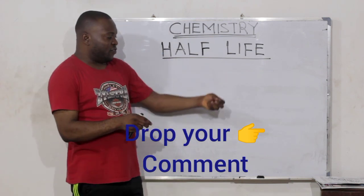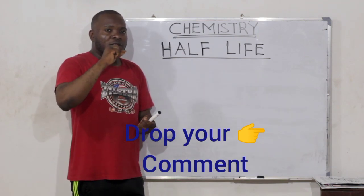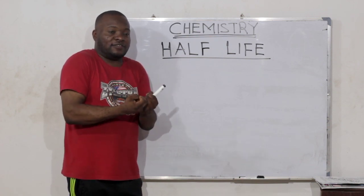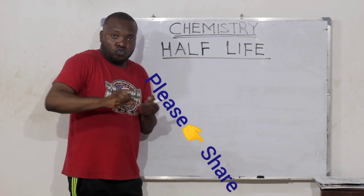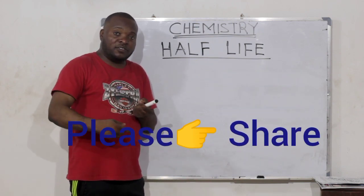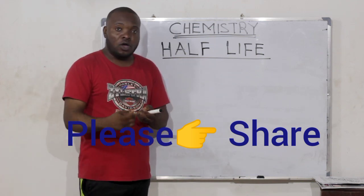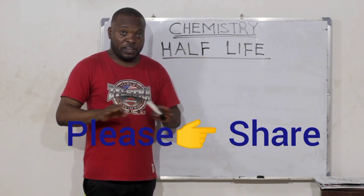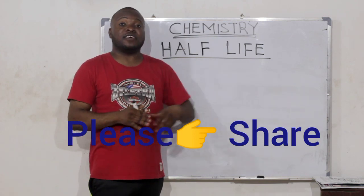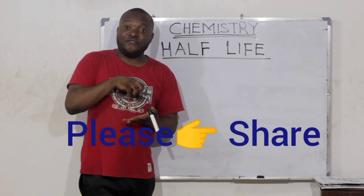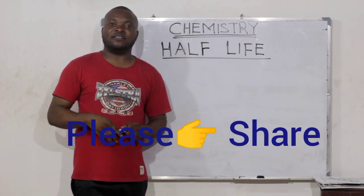When a radioactive substance is kept, as time goes on, a certain mass of that substance will be decaying out — it will be emitted out. Radioactivity is the spontaneous emission of a particle. The time it will take a radioactive substance to reduce to half of its original quantity is what we call the half-life of that element.